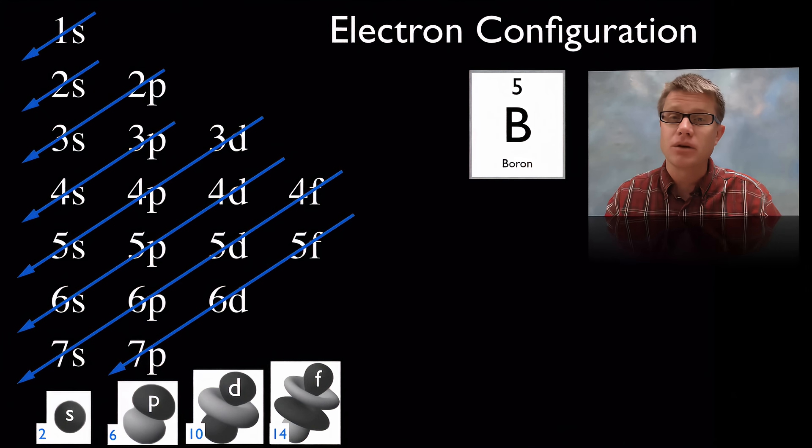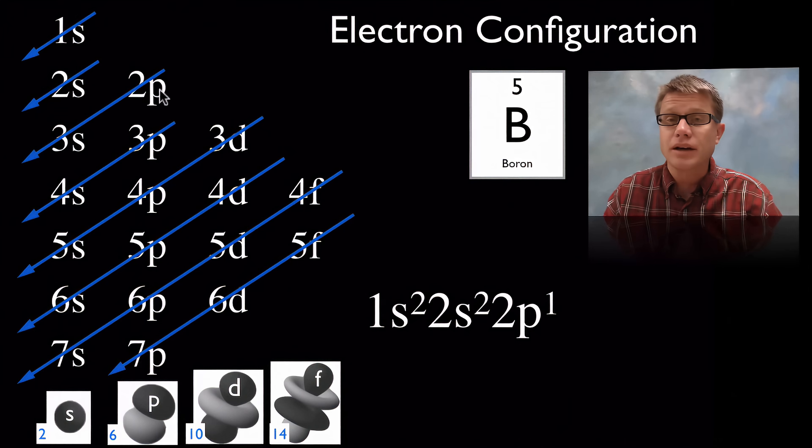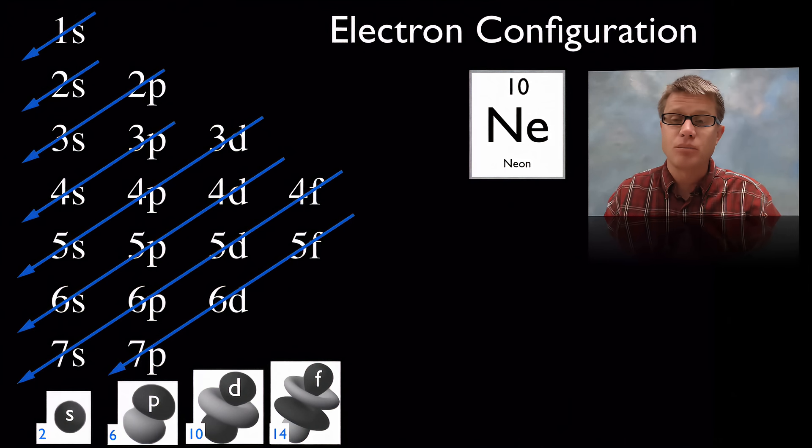If we go to boron then, how are we going to write boron? Well you're going to start here, go here, go here. Boron is going to be 1S2 because we can only put 2 electrons in there. We then go to the 2S. It's going to be 2S2 because we can only put 2 electrons in that. And then we're going to go to the 2P and we only have one electron left. So we're going to put it there. So that would be boron.